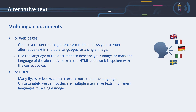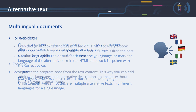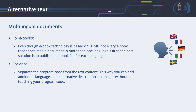For PDFs: many flyers or books contain text in more than one language. Unfortunately, we cannot declare multiple alternative texts in different languages for a single image, and there is no elegant solution to this problem. For e-books: even though e-book technology is based on HTML, not every e-book reader can read a document in more than one language — often the best solution is to publish an e-book file for each language. For apps: separate the program code from the text content. This way, you can add additional languages and alternative descriptions to the images without touching your program code.